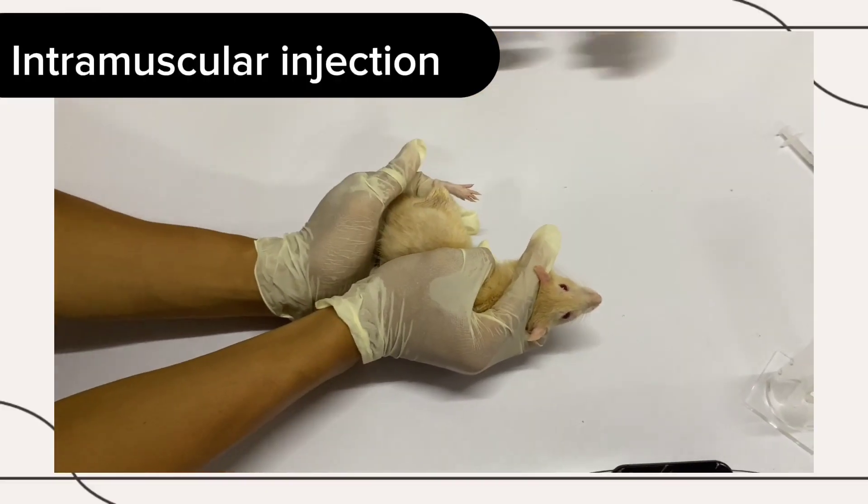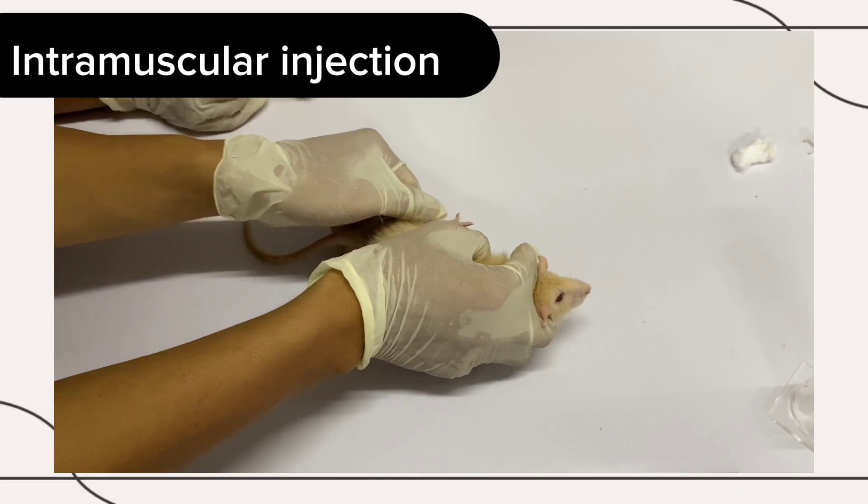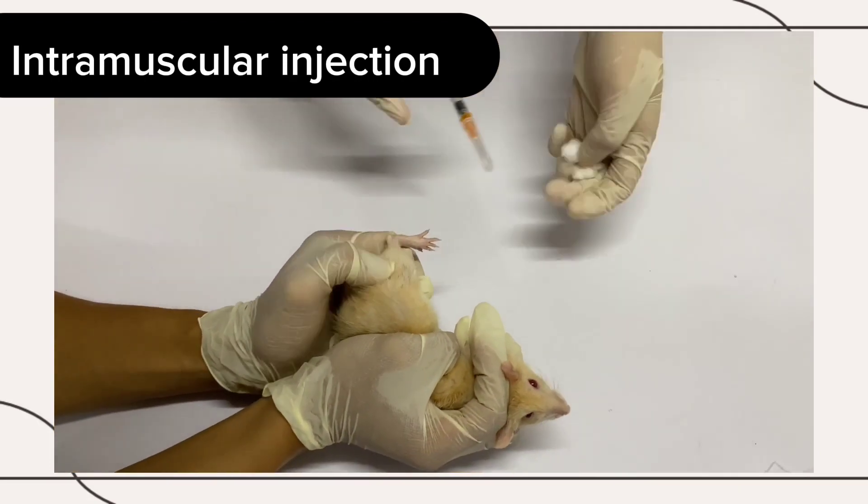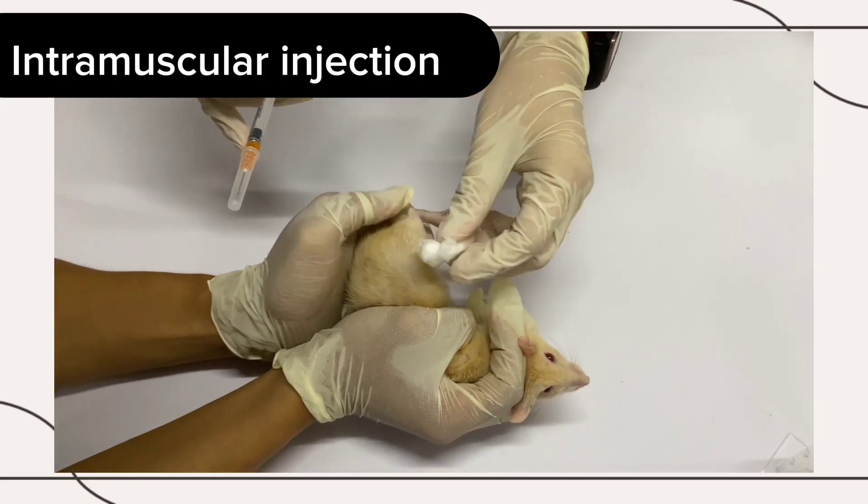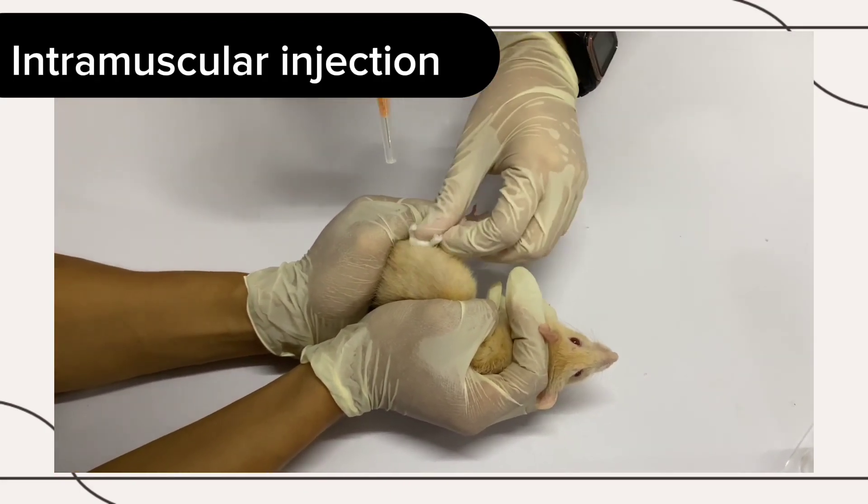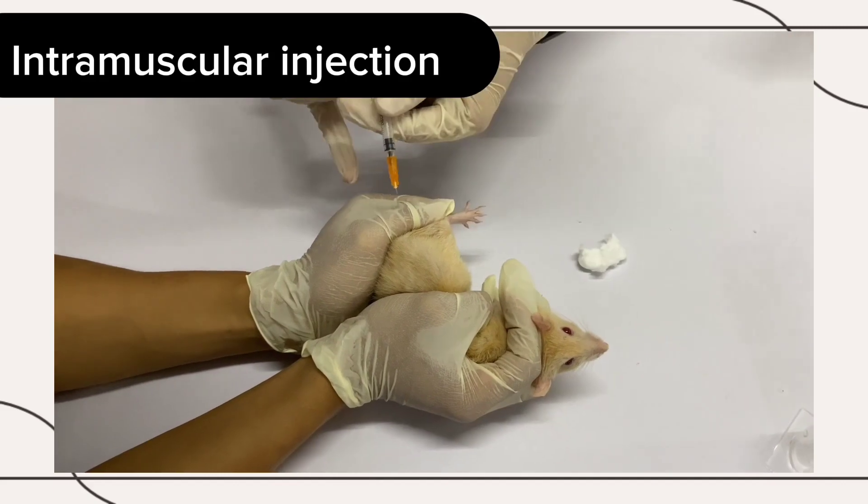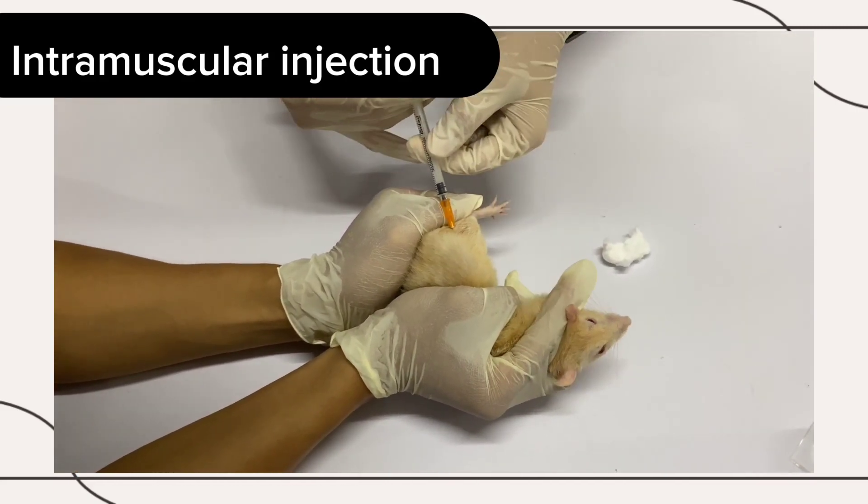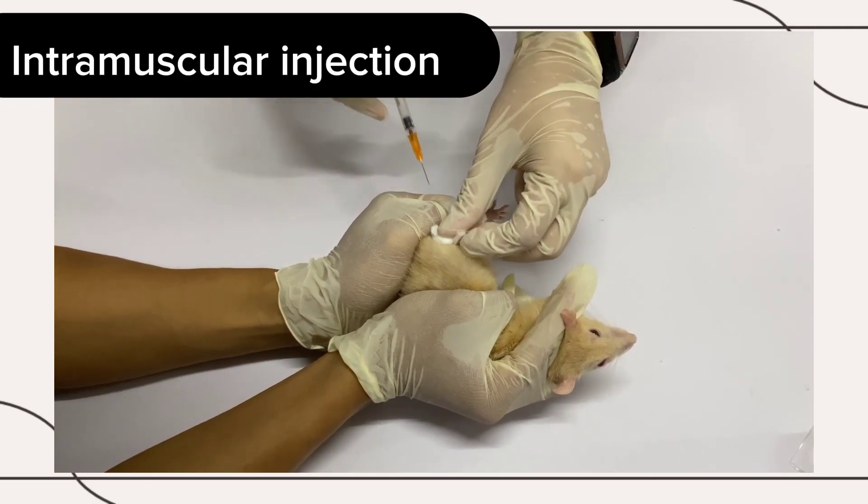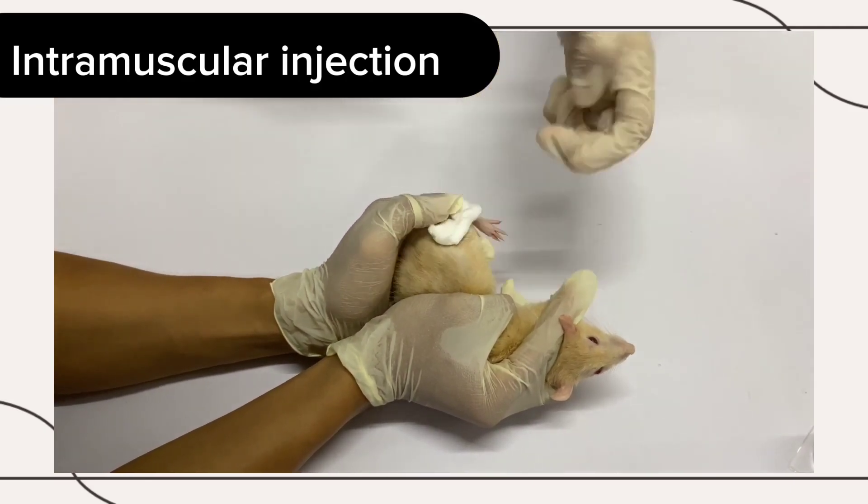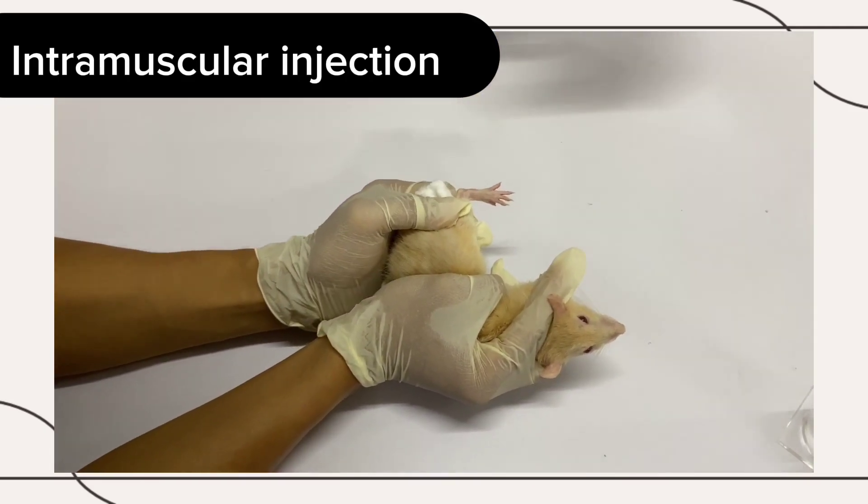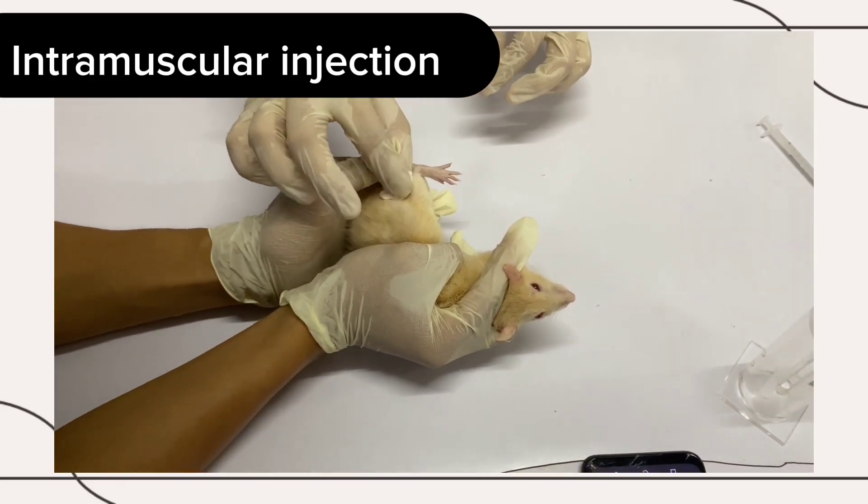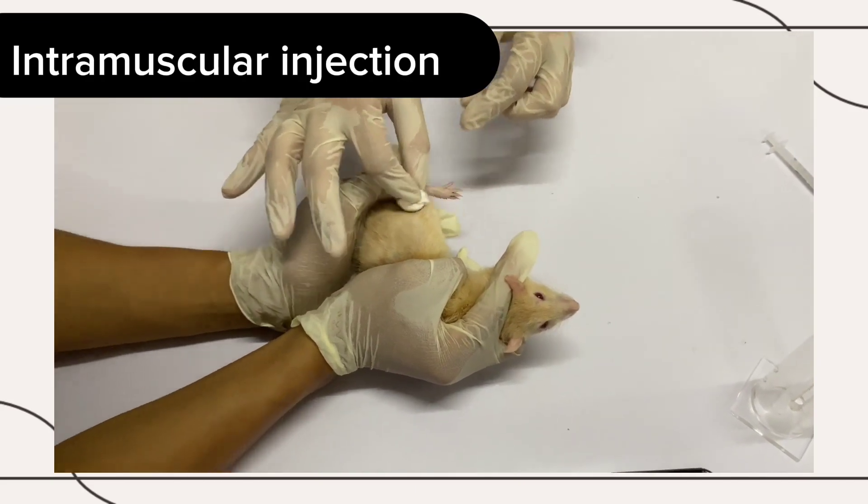Intramuscular Injection: This method involves injecting a substance into the muscle of the mouse, typically the thigh muscle. Prepare the injection site by cleaning it with alcohol. Locate the thigh muscle. Insert the needle at a 90 degree angle into the muscle. Slowly inject the substance. Remove the needle and gently massage the injection site. It is a good option for administering drugs or other compounds that need to be released at a moderate rate into the bloodstream.